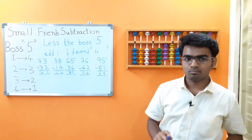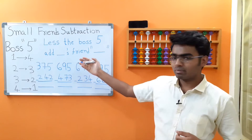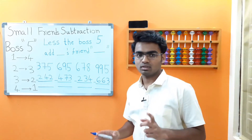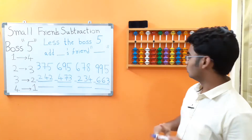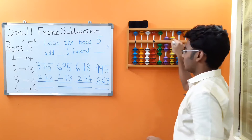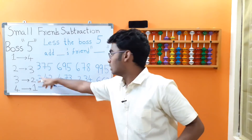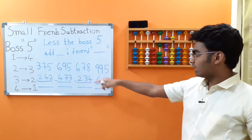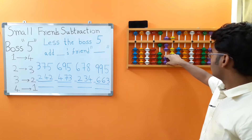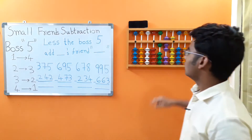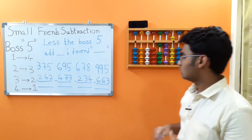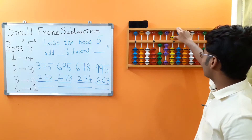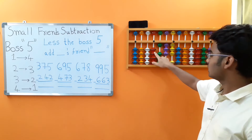Now let's cover 3-digit minus 3-digit numbers. From now on I won't be filling up these blanks — I'll only say the statement and you make a note of it. 375 minus 242. 3 minus 2 — subtract directly. 7 minus 4: we only have 2 beads — 4's friend is 1 — less the boss 5, add 4's friend 1. 5 minus 2: no beads — 2's friend is 3 — less the boss 5, add 2's friend 3. We got the answer as 133.